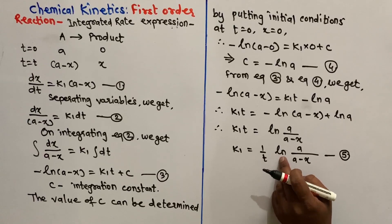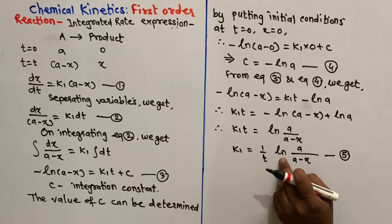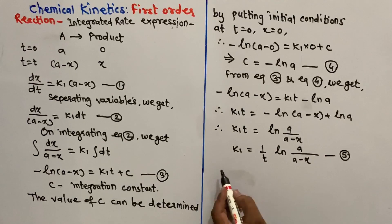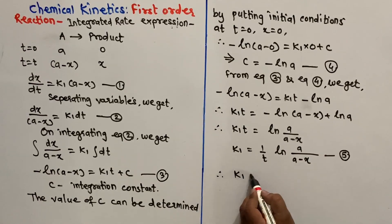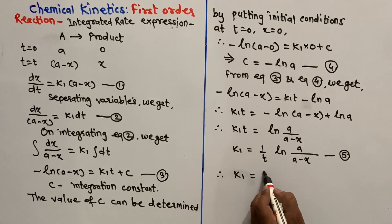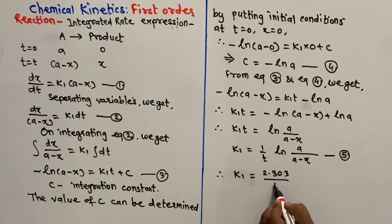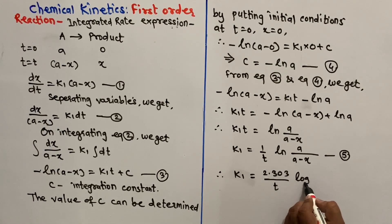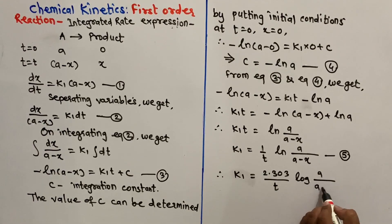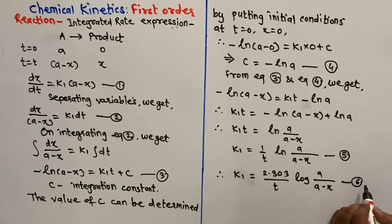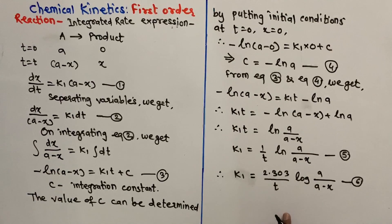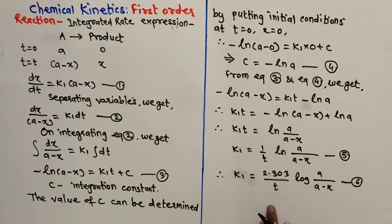This natural log can be converted to log base 10 by multiplying by 2.303. Therefore, k1 is equal to 2.303 divided by t into log of [A / (A minus x)]. This equation is the integrated rate expression for first-order reaction.